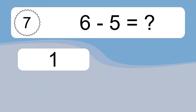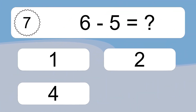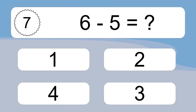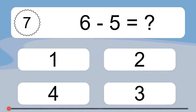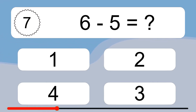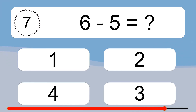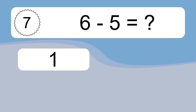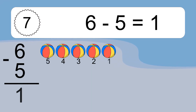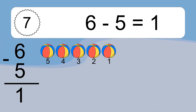6 minus 5 equals what? 6 minus 5 equals 1. Let's count it: 5, 4, 3, 2, 1.